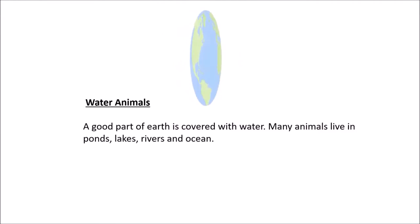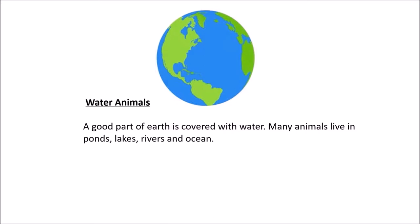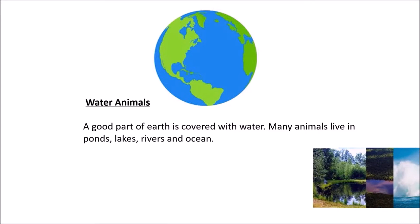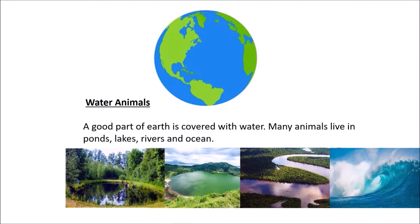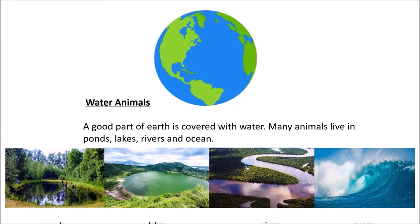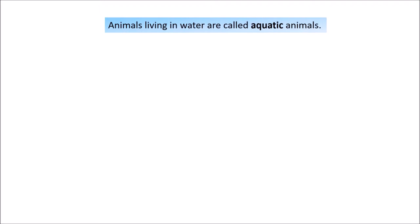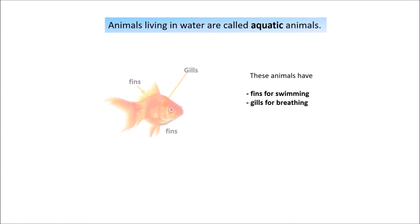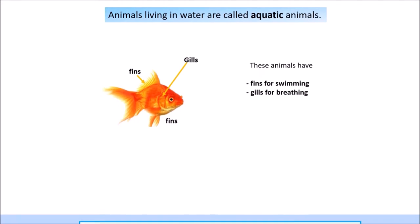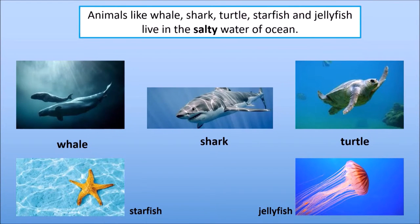Next are the water animals — animals who live in water. A good part of earth is covered with water. Many animals live in ponds, lakes, rivers, and ocean. Animals living in water are called aquatic animals. These animals have fins for swimming and gills for breathing. Some animals live in the salty water of the ocean, like whale, shark, turtle, starfish, and jellyfish.